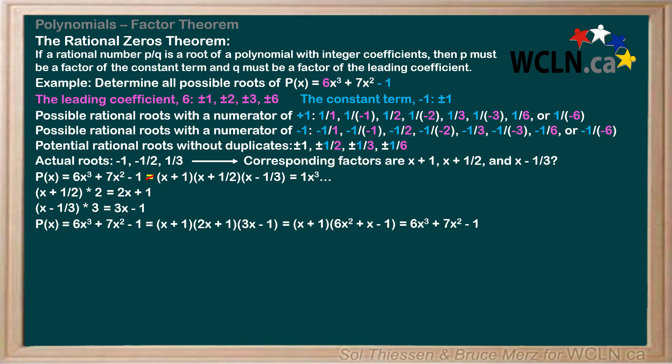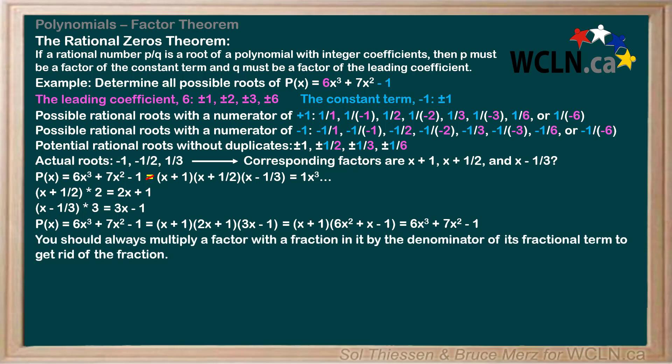So, as long as you deal with polynomials with integer coefficients, as we do in this course, you should always multiply a factor with a fraction in it by the denominator of its fractional term to get rid of the fraction. You probably see how this can get messy, so I recommend testing integer potential roots, like plus or minus 1, before testing fractional potential roots. That way, factors that give fractional roots, like 2x plus 1 and 3x minus 1, will hopefully be found through factoring a quadratic in step 4 of the process for factoring polynomials.